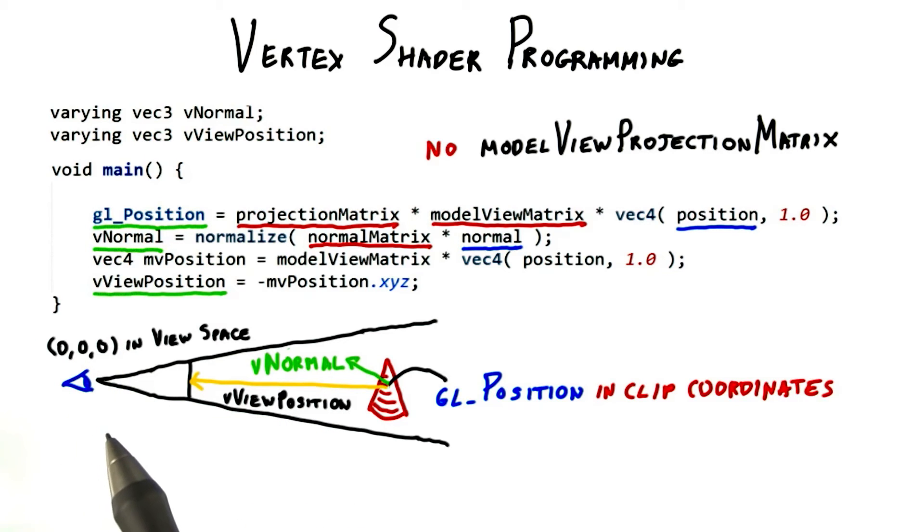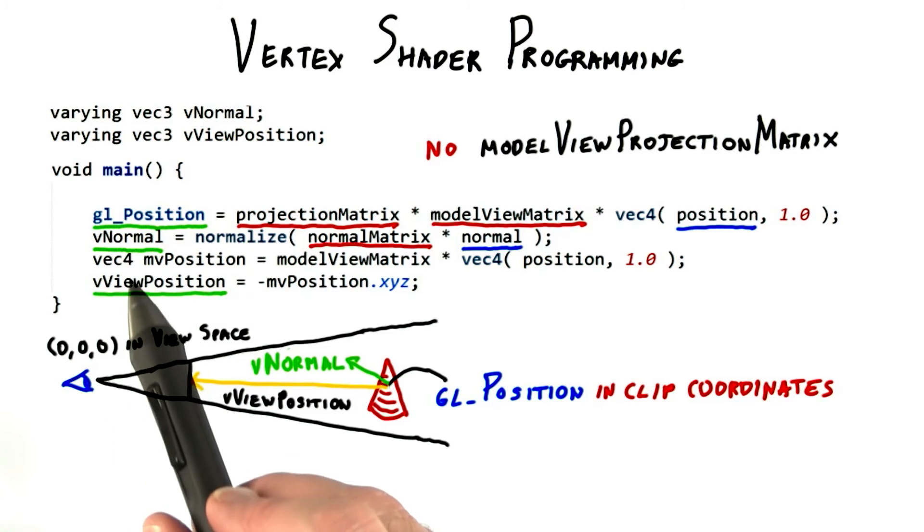We don't really need the temporary MV position vector. We could have combined these last two lines of code. This example is here to show how to compute it.